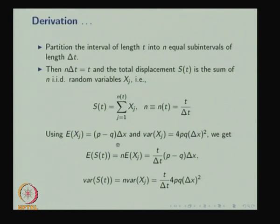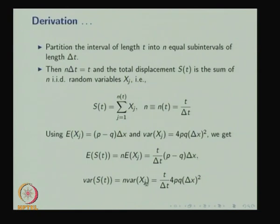We partition the interval [0, t] into n equal sub-intervals of length Δt, so n·Δt = t. The total displacement S(t) is then the sum of n i.i.d. random variables Xⱼ, where n = t/Δt. Since expectation is a linear operator and the Xⱼ are i.i.d., the mean of S(t) is n times the mean of one Xⱼ, and the variance of S(t) is n times the variance of one Xⱼ. We can compute the mean and variance and then take the limit as Δx → 0 and Δt → 0.